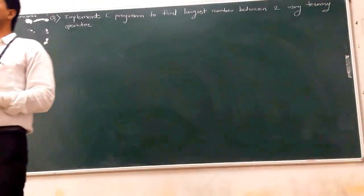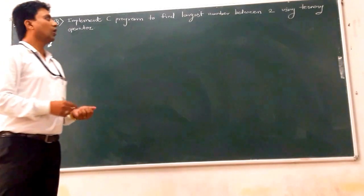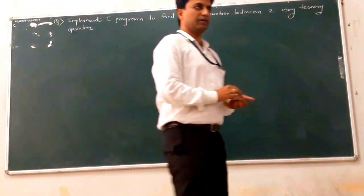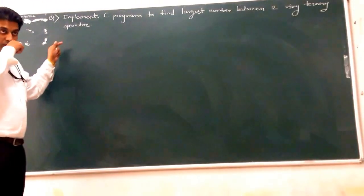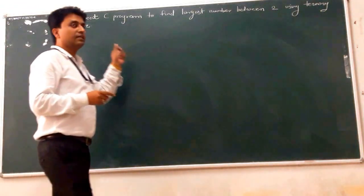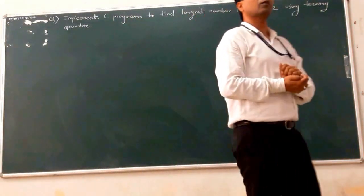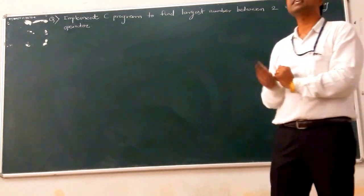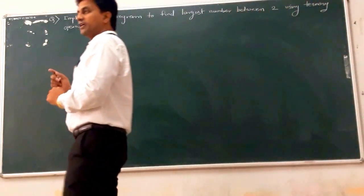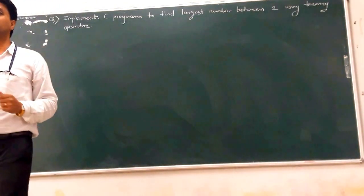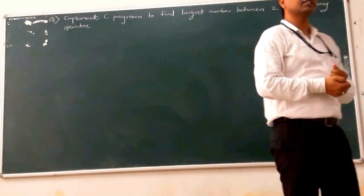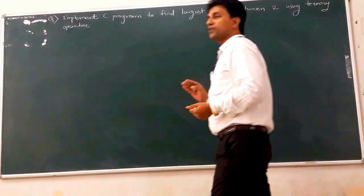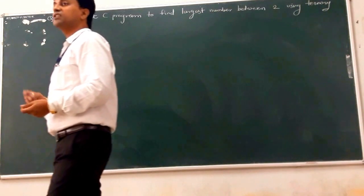Today we will start with a new point: what is meant by operator. There are different types of operators — unary operator, binary operator, and ternary operator. The unary operator performs operation on only a single operand. If an operator performs operation on two operands, it is called a binary operator. The third one is the ternary or tertiary operator, which performs operation on three operands.